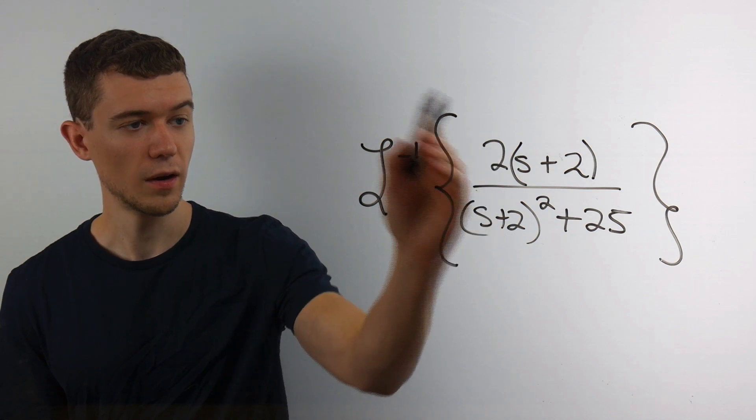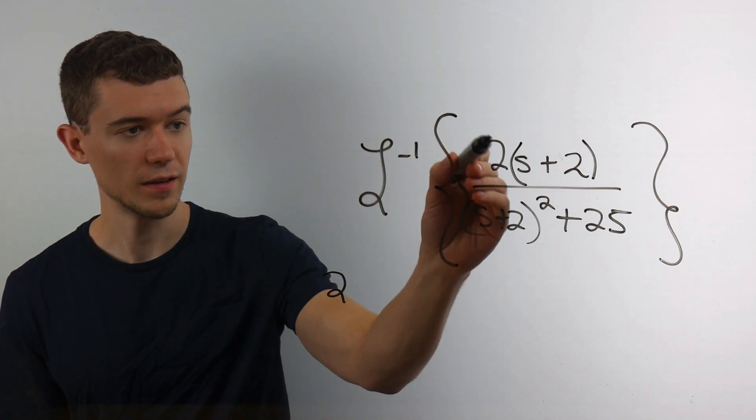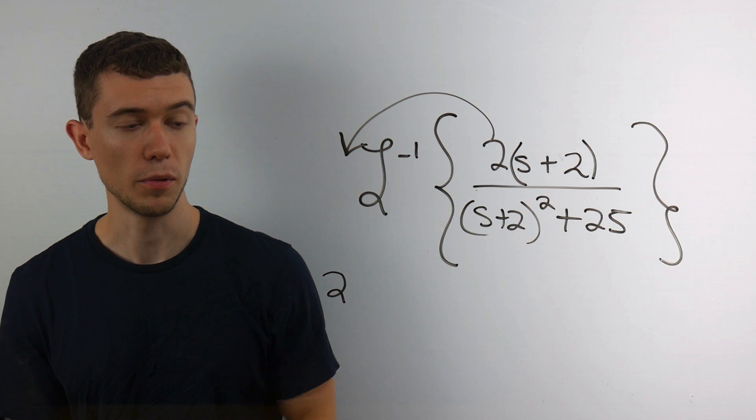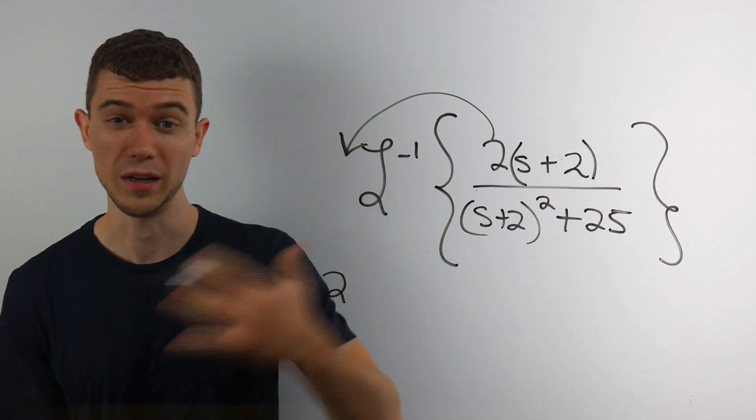So what I'm going to do is factor that 2 all the way out front, this 2, because Laplace transforms are linear. They're really integrals, so I can pull constants out of integrals.